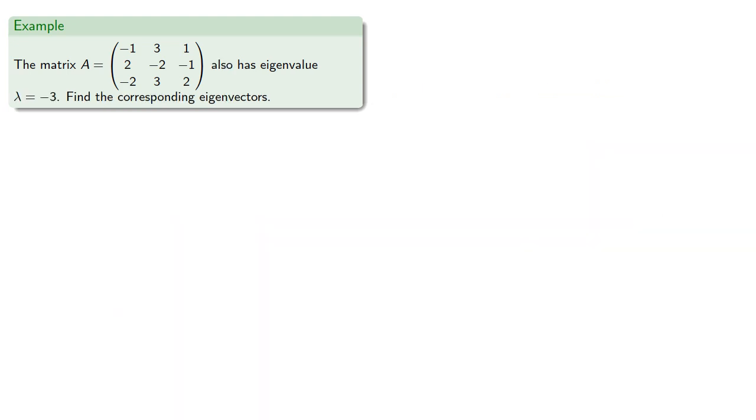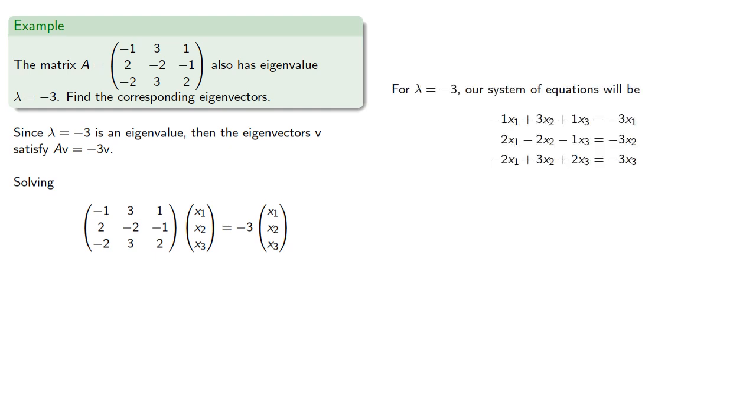Now suppose we know that lambda equals negative 3 is also an eigenvalue. Since lambda equals negative 3 is an eigenvalue, then the eigenvectors satisfy Av = -3v. And again, we can set up our equation. And our system of equations will be... And we can row reduce the coefficient matrix. And now we have a single free variable. And our solution is... And so our eigenvector will be...